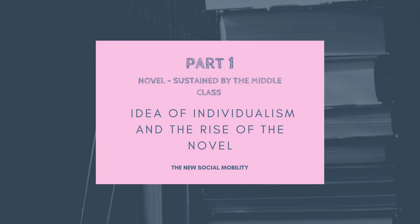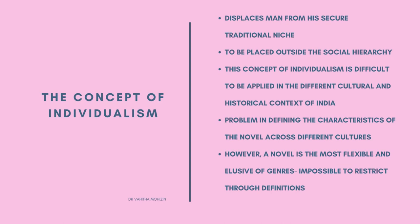This particular prose piece is divided into four parts. Part one consists of the idea of individualism and the rise of the novel — the new social mobility of the novel. Individualism displaces a person from his secure traditional niche and places him outside the social hierarchy. This concept of individualism is difficult to apply in the different cultural and historical context of India. The problem in defining the characteristics of the novel across different cultures is quite obvious. However, a novel is the most flexible and elusive of genres, and it is impossible to restrict it through certain definitions or limitations.